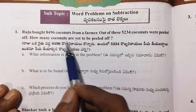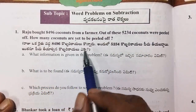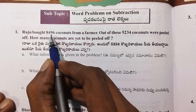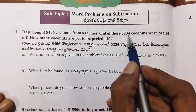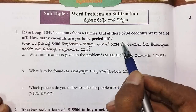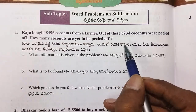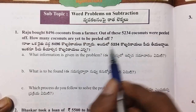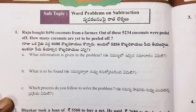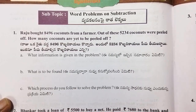How many coconuts are yet to be peeled off? First, what information is given in the problem? Raju bought some coconuts.